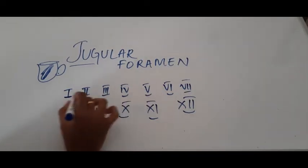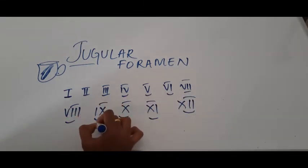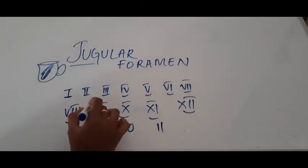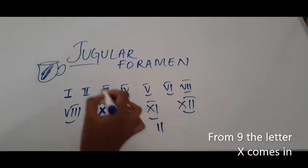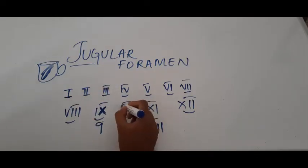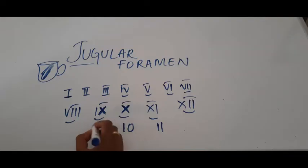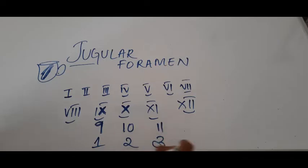These are the Roman letters. Here, if you notice, one, two, three, four, five, six, seven, eight, nine. From nine, ten, eleven. From ninth, the letter X comes in. So we need to remember when does the letter X come in Roman numeral? It is from nine. So we're giving them ranks. Like first rank, second rank and third rank. Fourth rank doesn't matter.